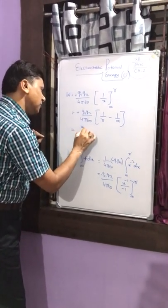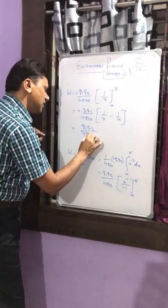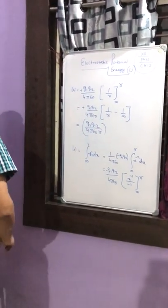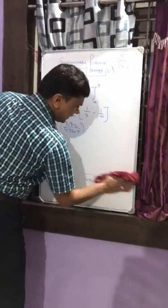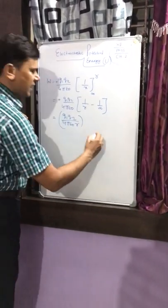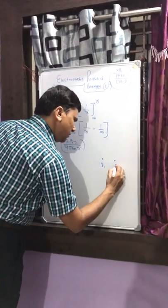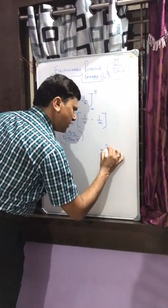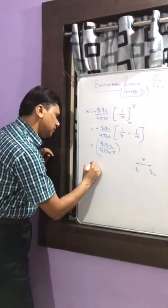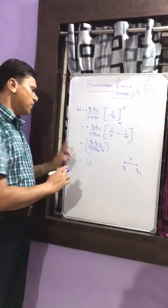One thing to note: while bringing the charge from infinity to this point, the force was in one direction and the displacement in the other, introducing a minus sign. Accounting for that sign, the minuses cancel and we ultimately get positive Q1 Q2 over 4π ε₀ r as the work done in arranging the two charges, which equals the potential energy of the system.